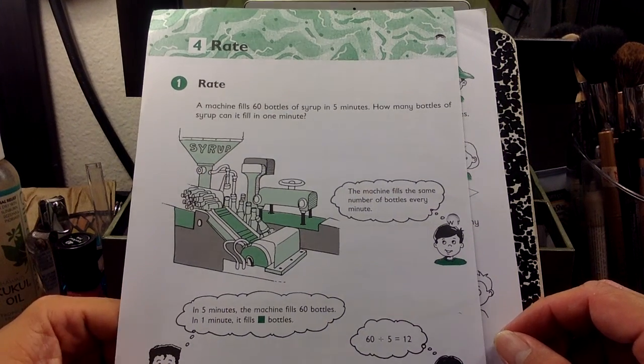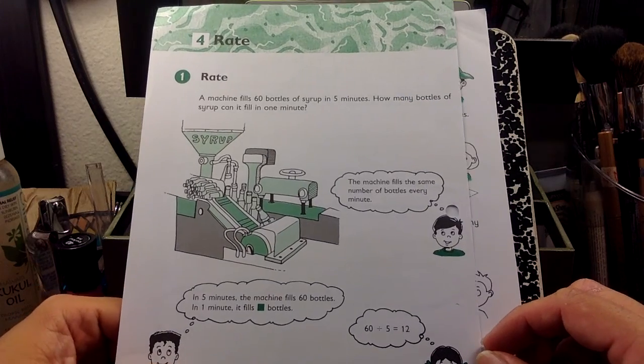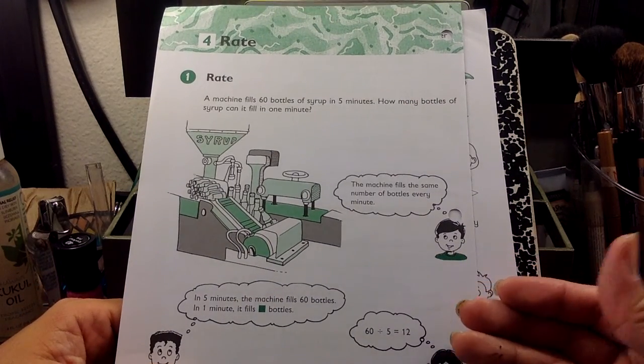All right, day 31. I think this is page 44 and 45. We need to talk about this. We're talking about rates.